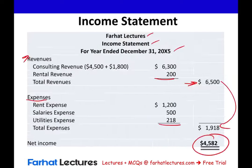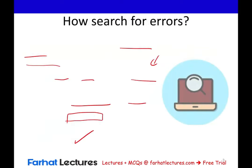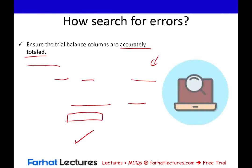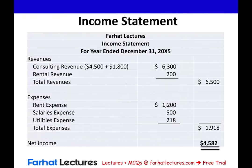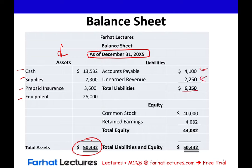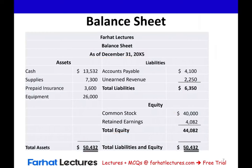We bring net income from the income statement, deduct the dividend of 500, and the ending retained earnings balance is 4,082. When preparing this for homework or an exam, once you use up revenues, expenses, and dividends from the trial balance, what remains are assets, liabilities, and equity — and you are ready to prepare the balance sheet as of December 31st. Assets include cash, supplies, prepaid, and equipment totaling 50,342. Liabilities total 6,350, common stock is 40,000, and retained earnings comes from the statement of retained earnings. Total assets must equal liabilities plus equity.